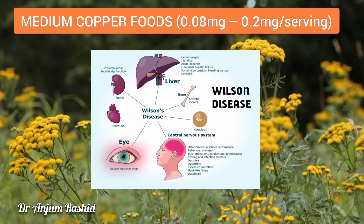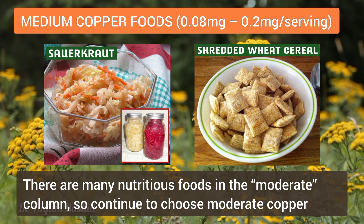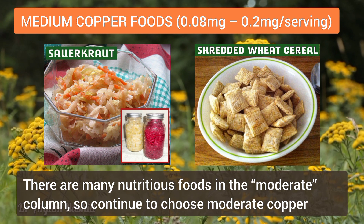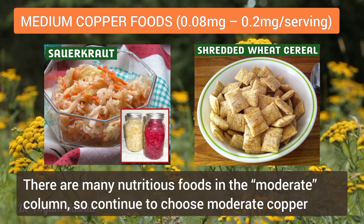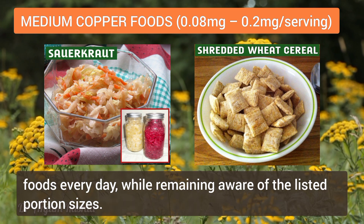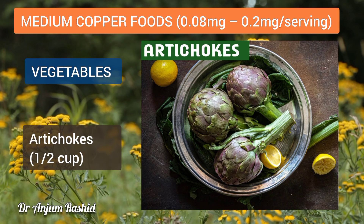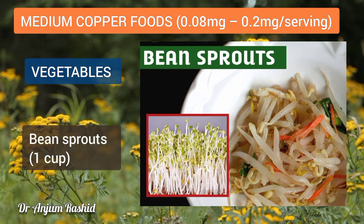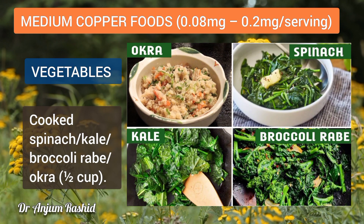Medium copper foods contain 0.08 to 0.2 milligrams of copper per serving. As mentioned, there are many nutritious foods in this moderate column, so continue to choose them every day while remaining aware of portion sizes. Medium copper vegetables include artichokes (1 cup), bean sprouts (1 cup), cooked spinach, kale, broccoli, rape, or okra (1 cup).